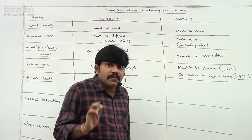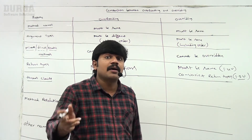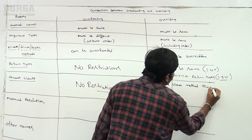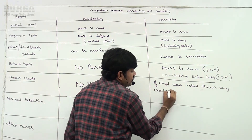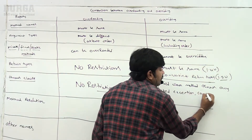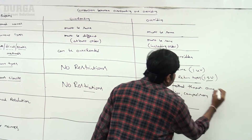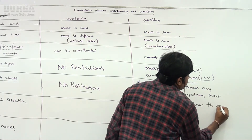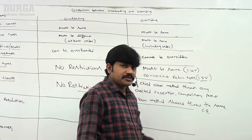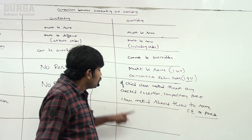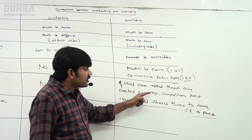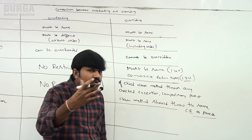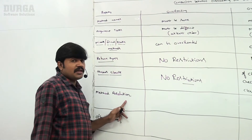But in overriding, if a child class method throws any checked exception, then the parent class method must also throw the same checked exception or its parent. For unchecked exceptions, there are no restrictions.